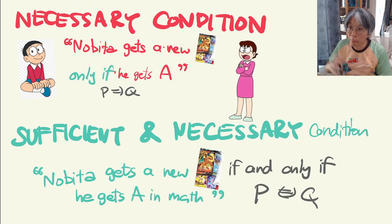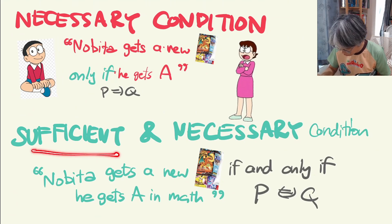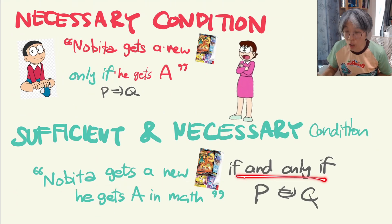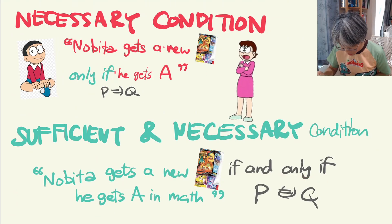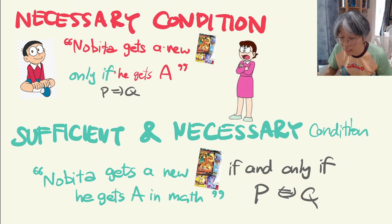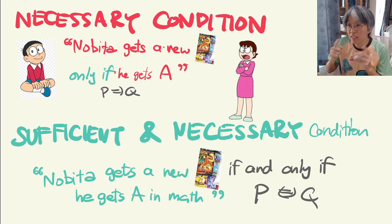Now if you combine both sufficient and necessary conditions, how can you express that? Nobita gets a new Pokemon card if and only if he gets an A in math — or P if and only if Q. In that sense it means that statements P and Q are equivalent: seeing that he gets a new card is the same as knowing that he gets an A in math.